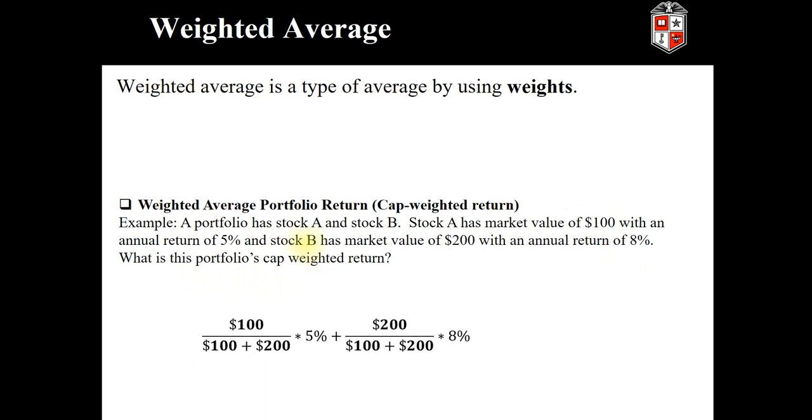To solve this, we use the same intuition we learned in the prior slide. We take the total value of $100 as a numerator, and the denominator is the summation of the entire portfolio value. So, 100 plus 200. So again, 1 third times the 5% return.